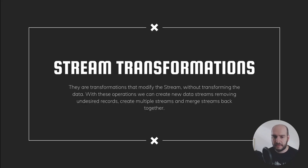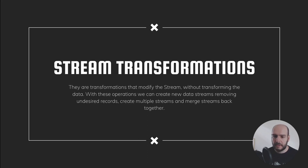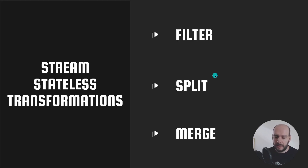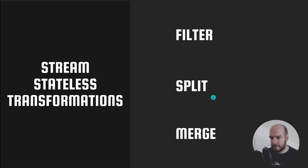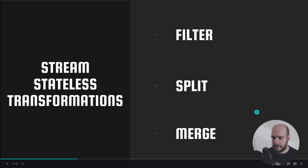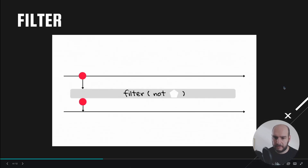Stream transformations are transformations that modify the stream without modifying the data inside the stream. With these operations we can create new data streams, removing undesired records, creating multiple streams, and merging streams back together. The three main operations we're going to see are filter, split, and merge. Let's take a look at filter first.